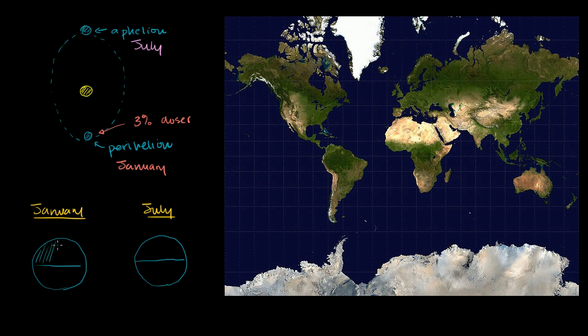So January is obviously when we have the northern hemisphere winter. So I'll paint it in blue right over here. It is winter. And July is when we have the northern hemisphere summer or the southern hemisphere winter. So then we have winter during July in the southern hemisphere. And let me put summer in orange.